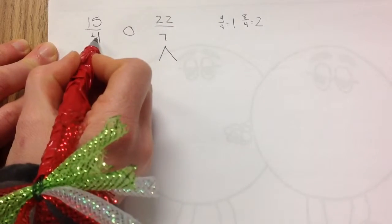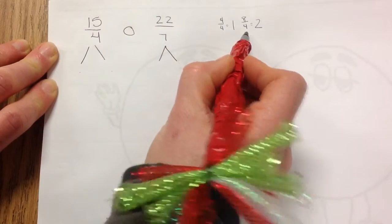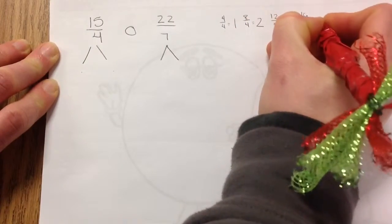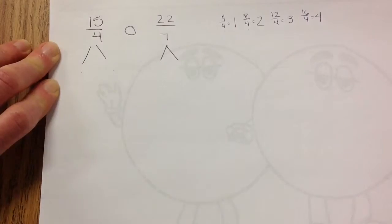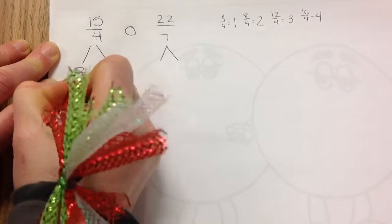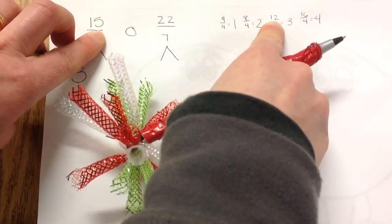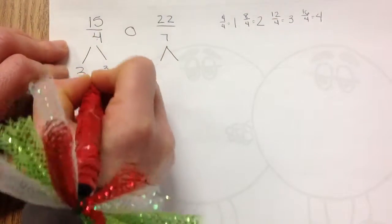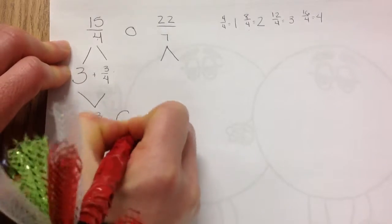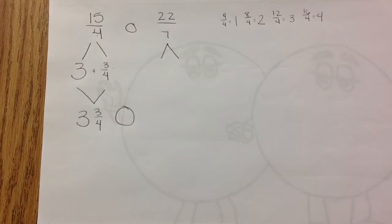I'm going to do fifteen-fourths with you. Four-fourths is one, eight-fourths is two, twelve-fourths is three, and sixteen-fourths is four. I don't have sixteen-fourths, so I go with twelve-fourths, which is three wholes. Fifteen minus twelve is three, so I have three-fourths left. Put them together and it equals three and three-fourths. Now please do the same thing with twenty-two-sevenths using sevenths. Pause while you do it.